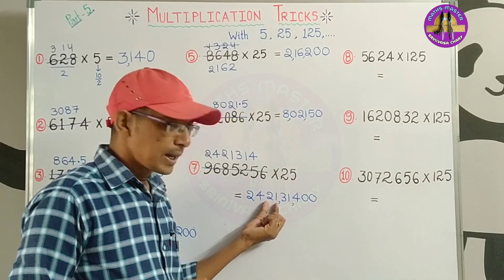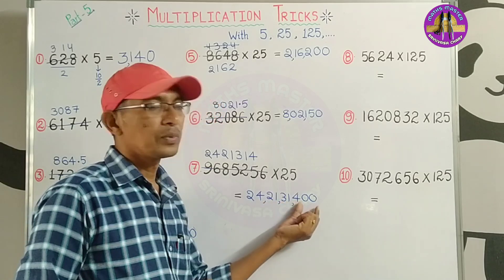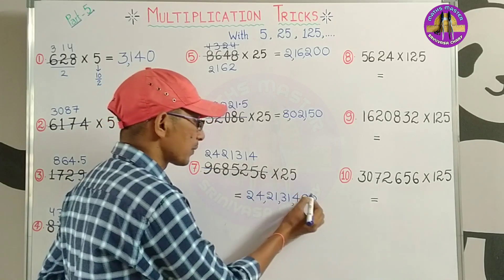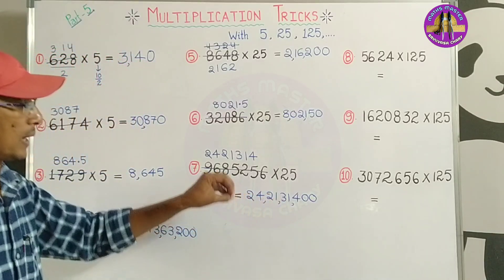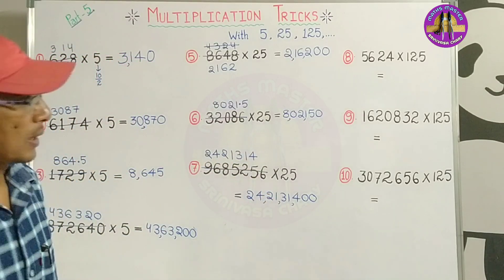3,1,400. So this multiplication is 25. It will be simple to answer.